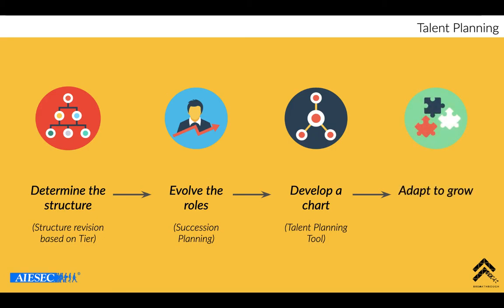The last step is to adapt to grow — consistent review of structure and talent. This is the first step to make sure we have our system in place, but what's more important is the consistent review. For example, if after MRD you wanted to recruit 10 people but you only end up with five, that's not necessarily the end — maybe what you need to do is restructure your JD or restructure your structure, so that you can evolve members to take up more responsibilities.